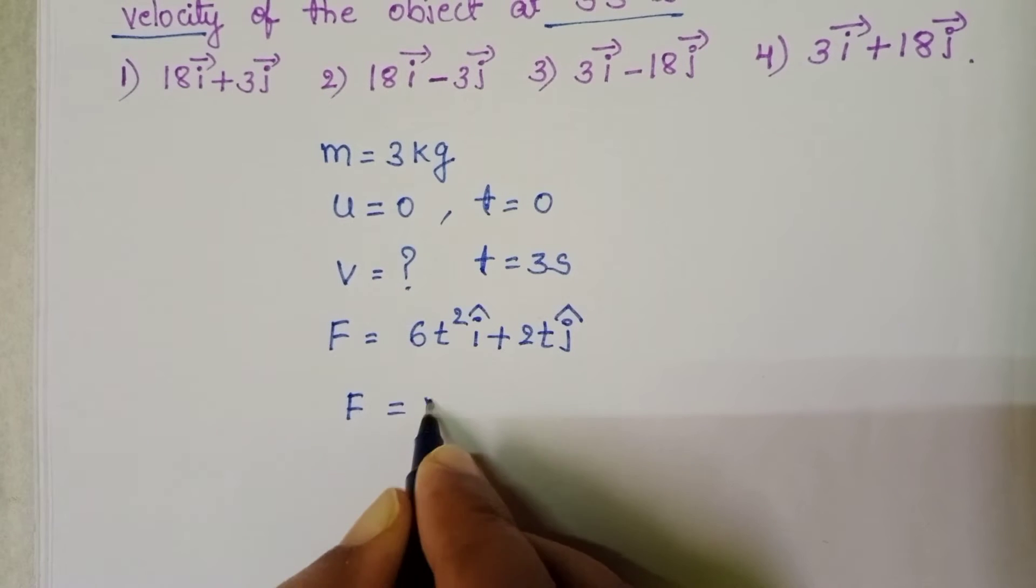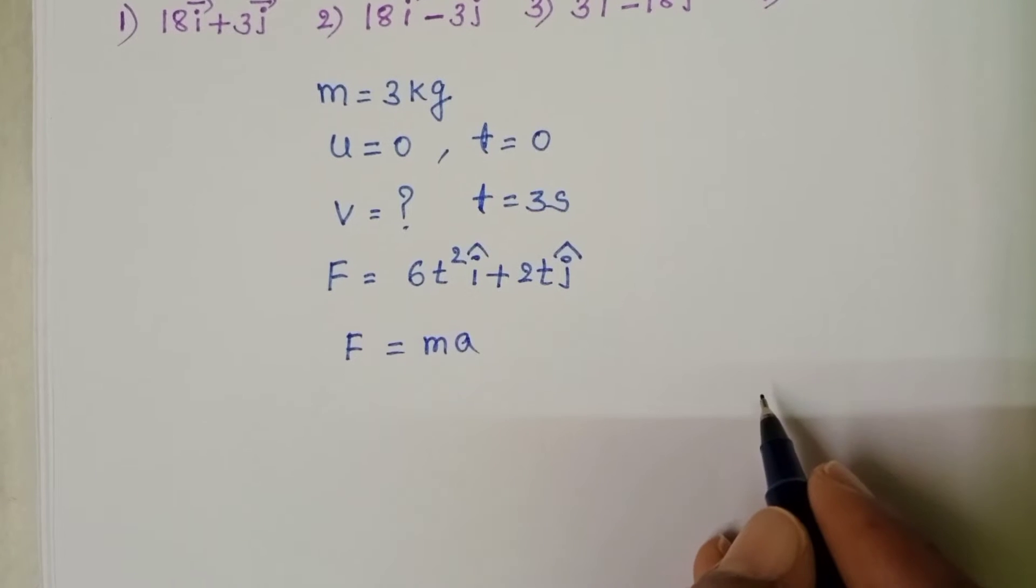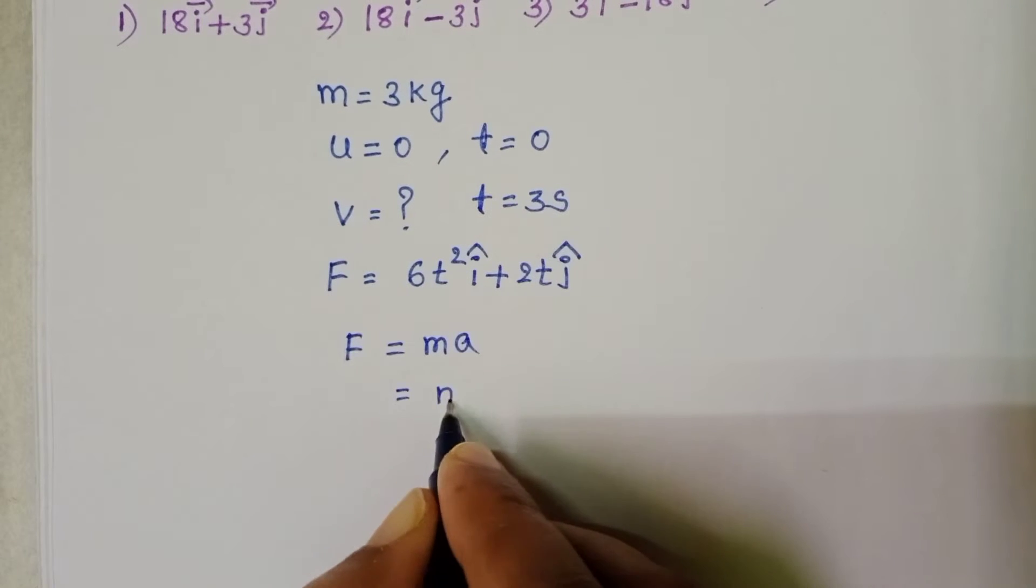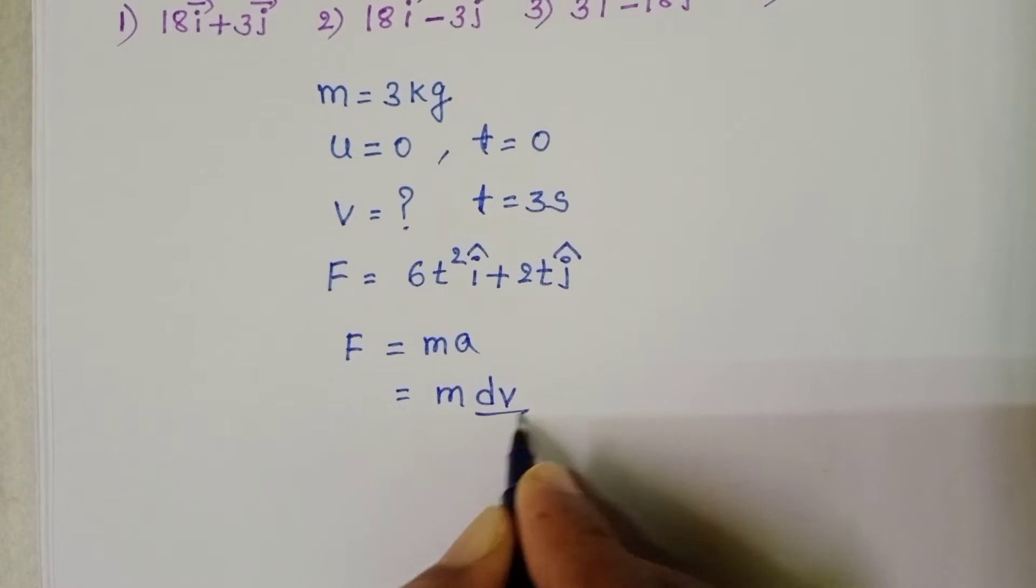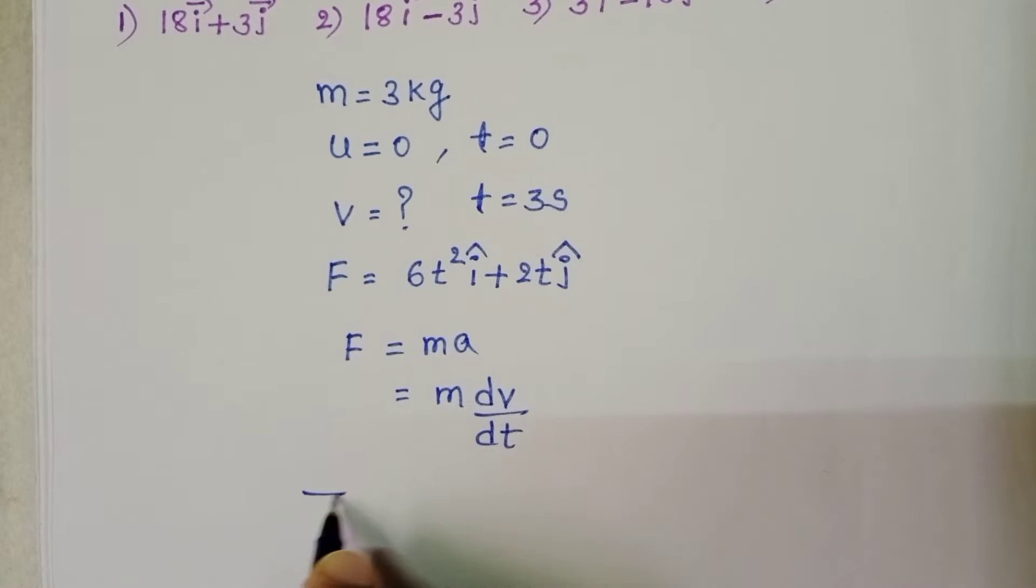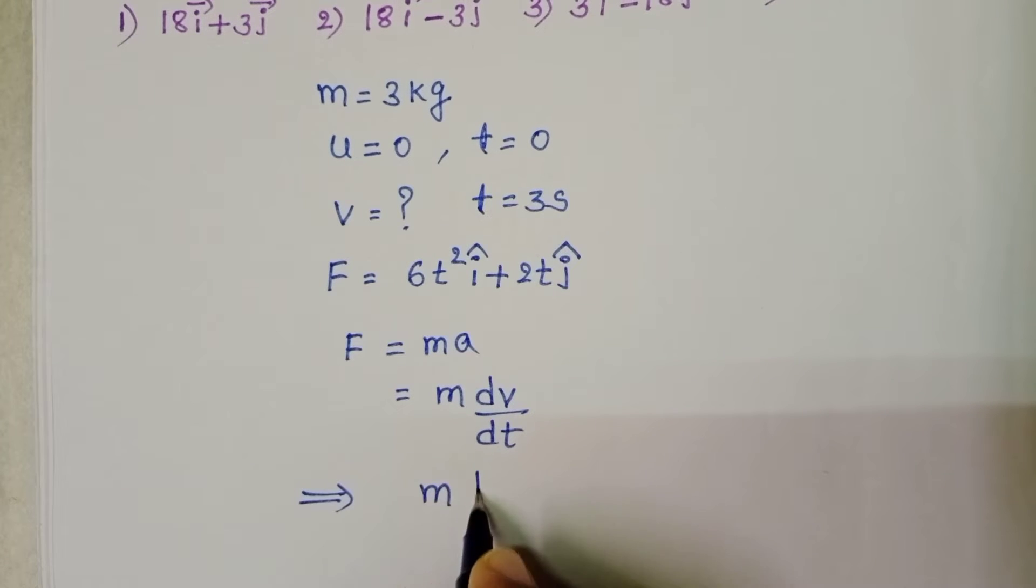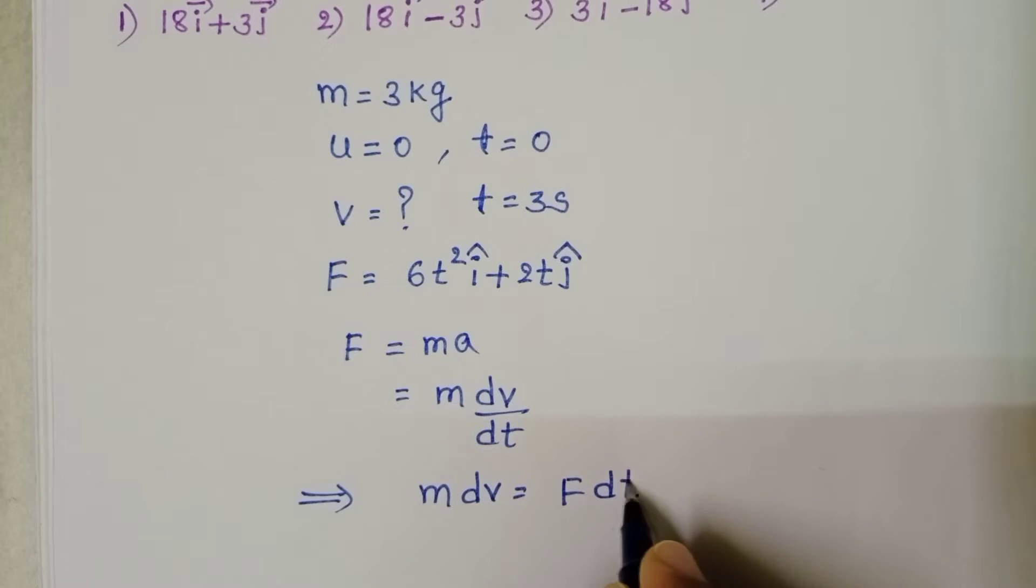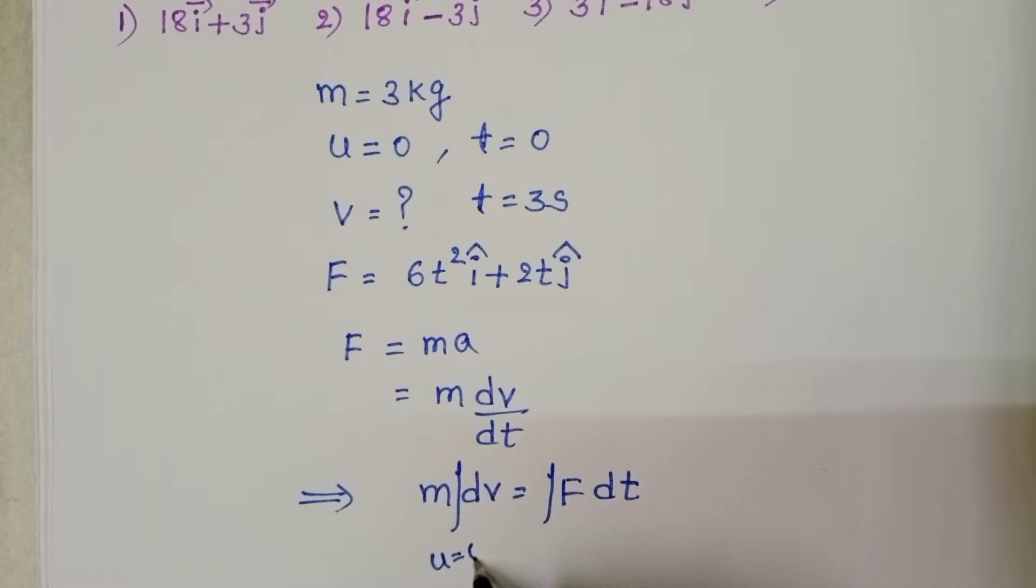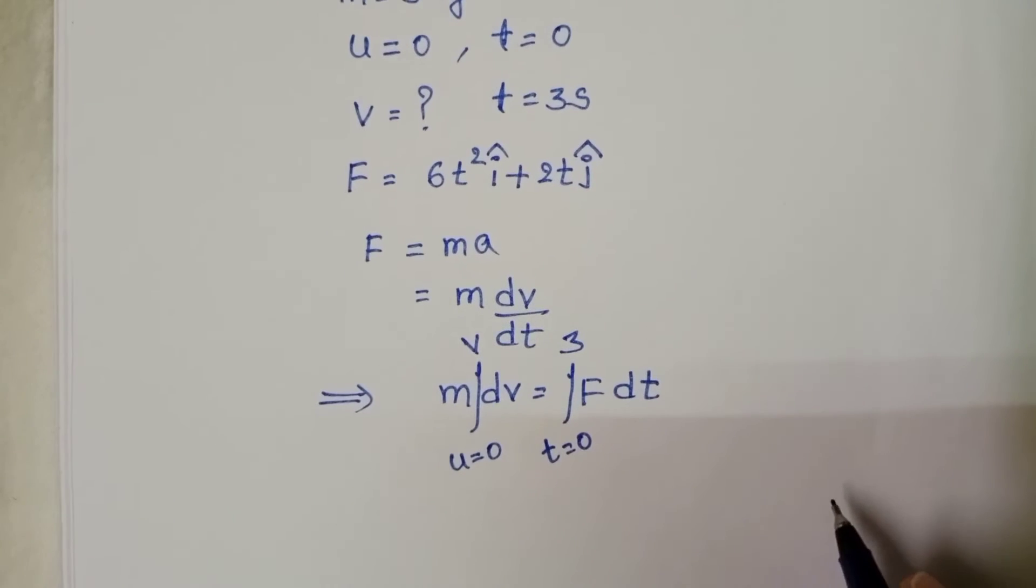Take F equals ma. In place of acceleration dv/dt, from this m dv equals F dt. Take integration on both sides with velocity limits from 0 to v and time limits from 0 to 3 seconds.